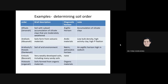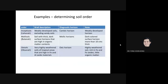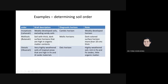Let's say you determine a soil order, and you have a Mollisol and want to describe further the state of the organic matter. Based on the horizons we talked about, Mollisols usually have a mollic horizon — mollic means a dark-colored surface horizon more than 10 centimeters thick. These are organic matter present in high content and very thick.